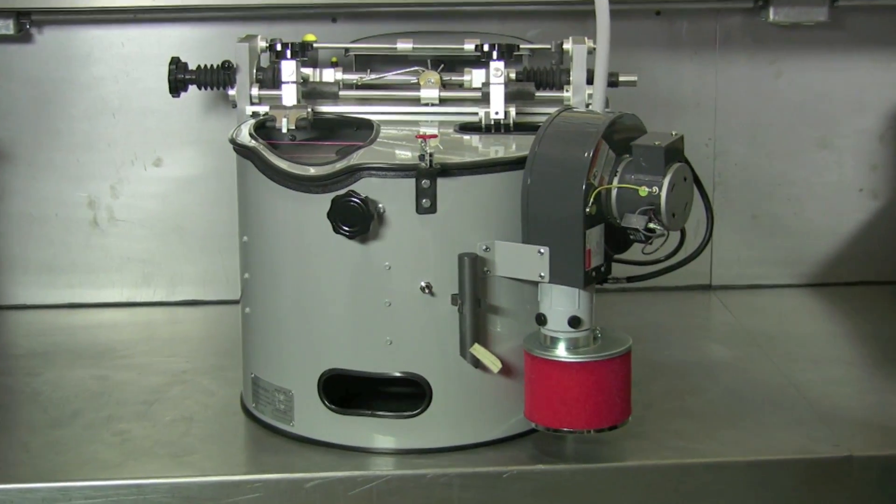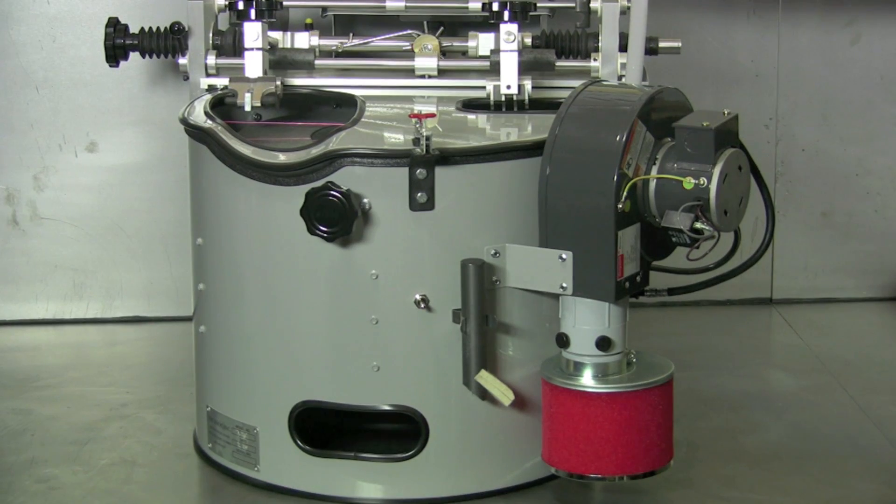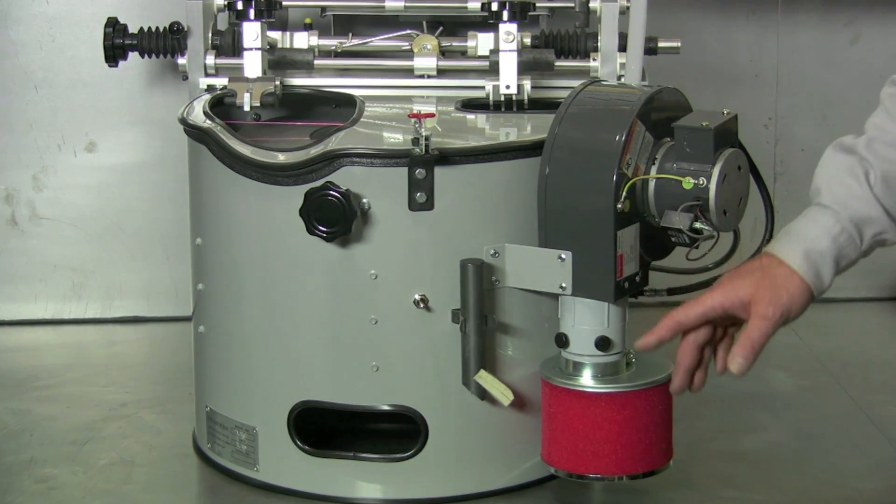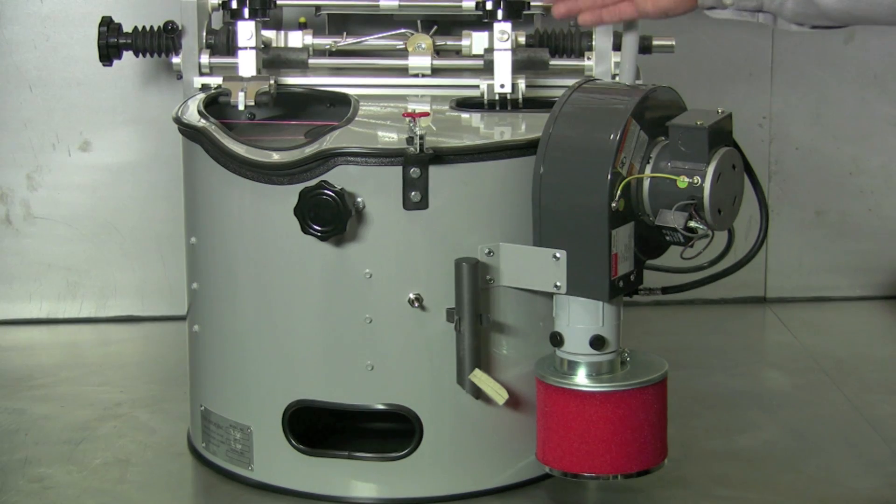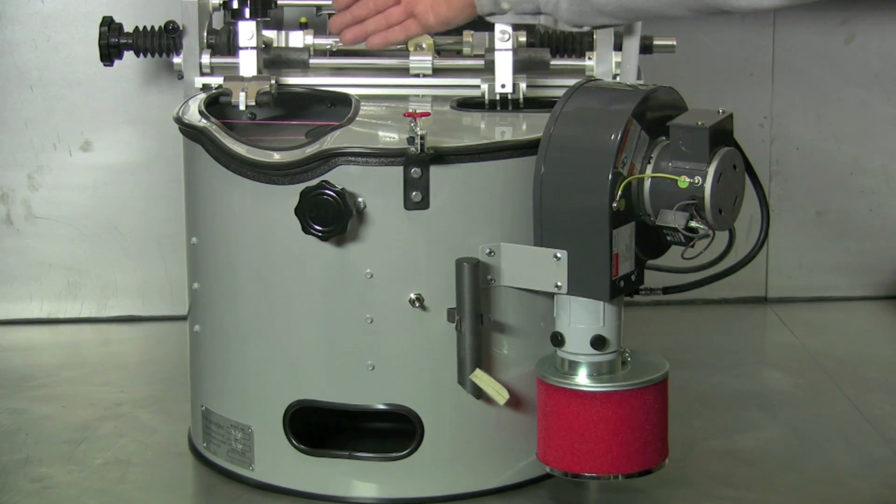The automated model comes with the dust control blower. It exhausts through this filter and maintains a negative air pressure in the openings in the lid.